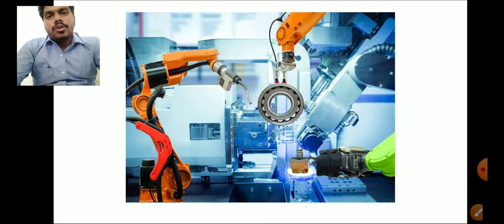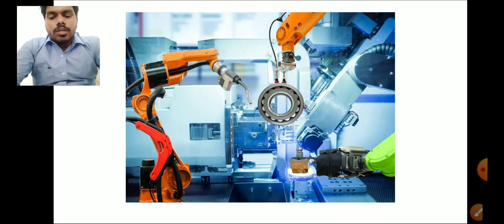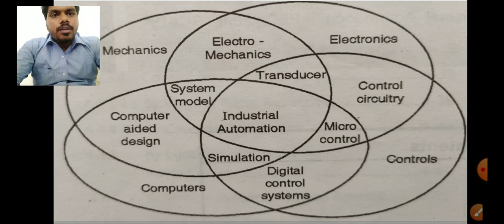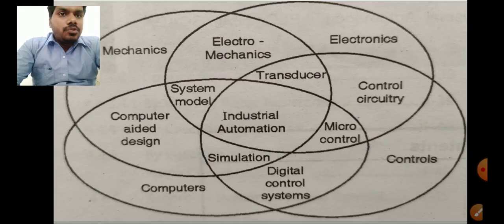Automation can be applied in mostly all industrial processes, but it is most commonly associated with the manufacturing industry, which has many complex automation devices widely used. Automation is an integration of mechanical, electronics, computer, communication, control systems, electrical engineering, digital control systems, microcontrollers, computers, computer-aided systems, transducers, and electrical mechanics.